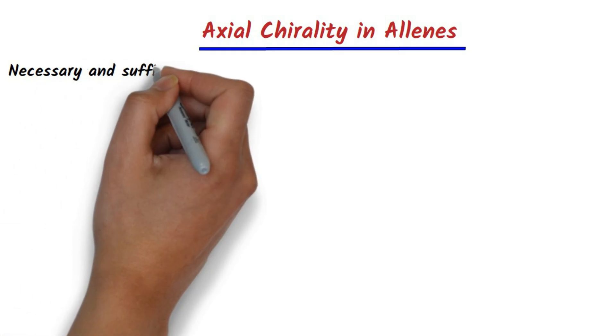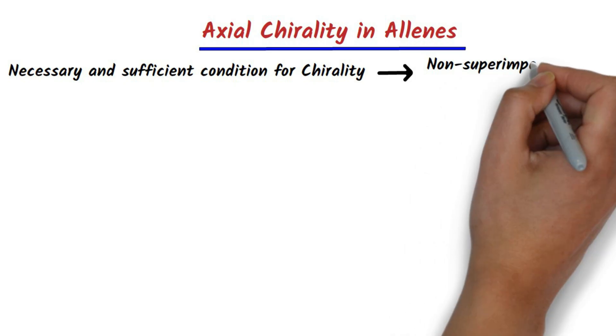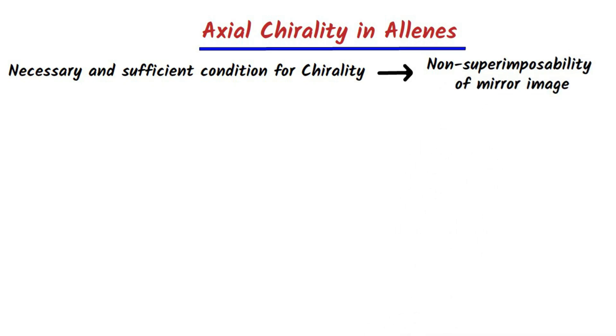Before discussing this topic, you must have gone through our lecture on chirality and enantiomers. If not, then I suggest you must. The link is given in the description as well as here. We now know that the necessary and sufficient condition for chirality in an object or molecule is non-superimposability of the mirror image.